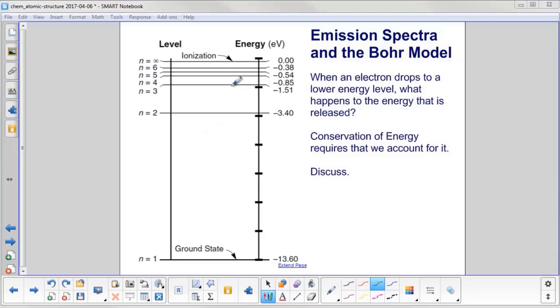When an electron drops to an energy level lower than it, for example, if you go from n equals 3 to n equals 2, what happens to the energy that is released? Conservation of energy requires that we think about it and figure out where it goes. If you're with a few other people, discuss it. If you're by yourself, think about it for a second.